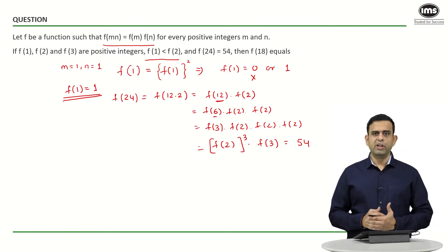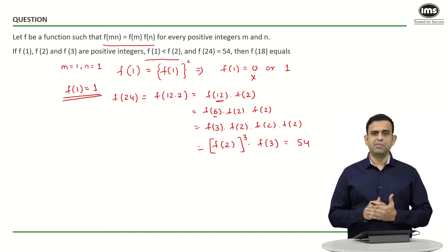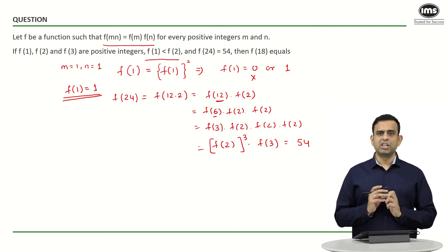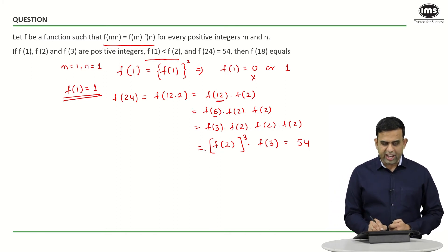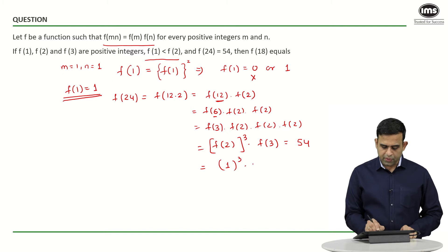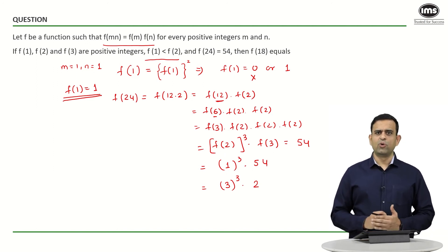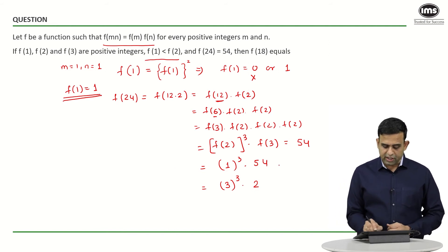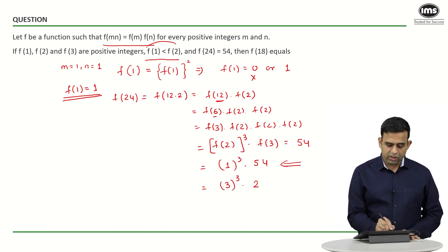So we have f(2)³×f(3) = 54. Since both f(2) and f(3) are positive integers, I want to write 54 in the form of some positive integer cubed times another positive integer. There are two possible ways: 1³×54, or 3³×2, since 54 = 27×2 = 3³×2.